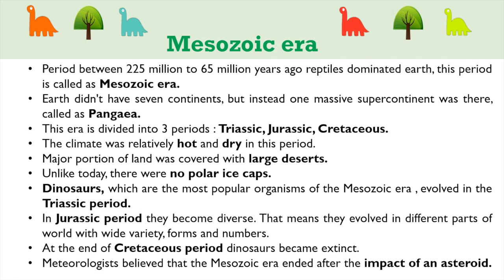During the period between 225 million to 65 million years ago, reptiles dominated Earth. This period is called the Mesozoic Era. Earth didn't have seven continents; instead, one massive supercontinent called Pangaea existed. This era is divided into three periods: Triassic, Jurassic, and Cretaceous. The climate was relatively hot and dry, and a major portion of land was covered with large deserts.